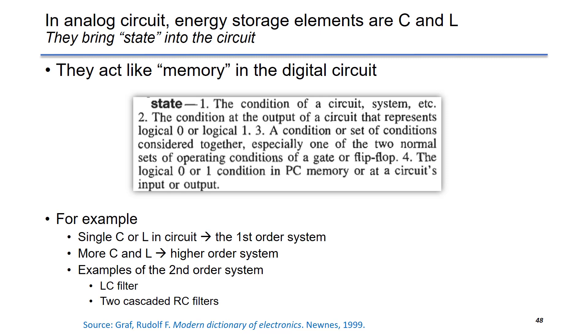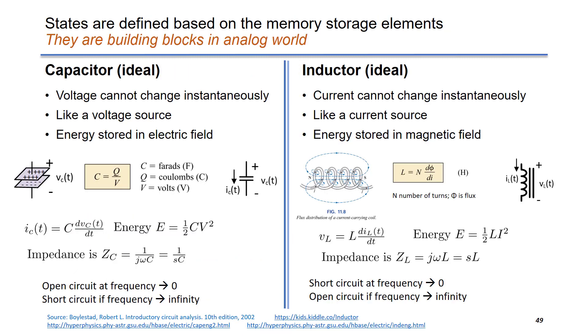For example, if you have a single L or C in the circuit, this is a first-order system. If you have more C or L, you can build a higher-order system. For example, in a second-order system, it can be a LC filter or it can be built by two cascaded RC filters. States are defined based on the memory storage elements.